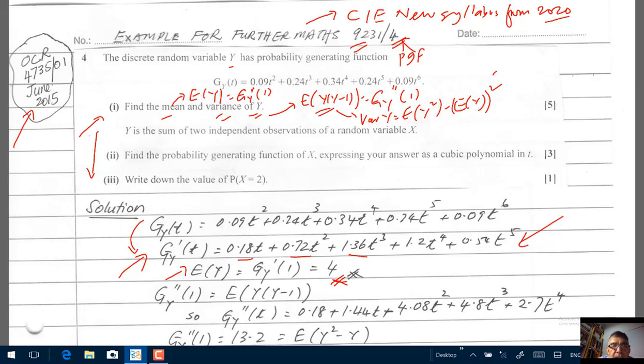And to find the variance, like I said, we need to first go ahead and differentiate this thing here, g'(t), differentiate it one more time, so that we can get the second order derivative, and that's here. The second order derivative, g_y''(t), just differentiate this thing here.